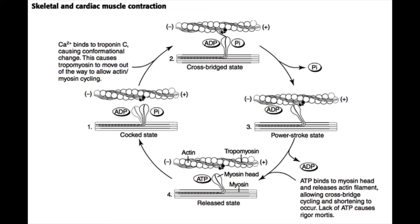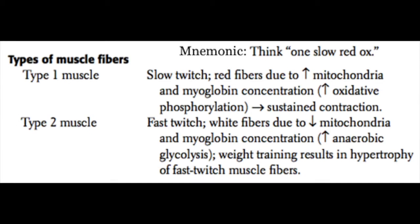Without ATP, the muscle remains contracted, which is why there is a stiffened state in the immediate time following death. Finally, the myosin head binds a new ATP, hydrolyzes it into ADP and inorganic phosphate to re-cock itself, and the whole process is ready to happen again. This process of contraction occurs in two different types of muscle fibers. The first are Type 1 muscle fibers, also known as slow twitch or red fibers.